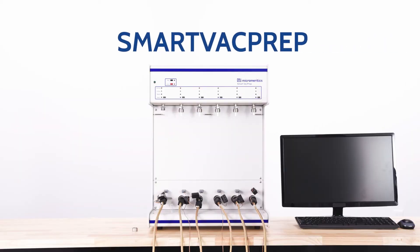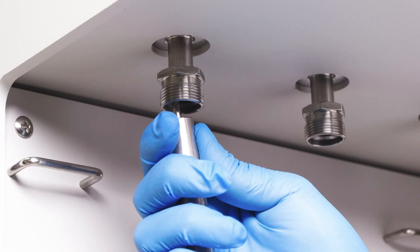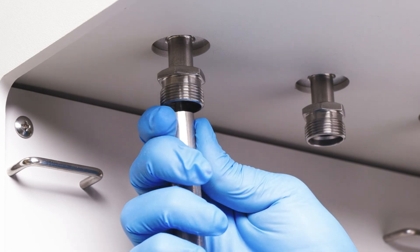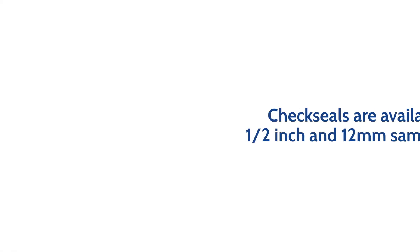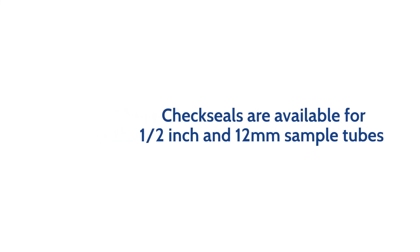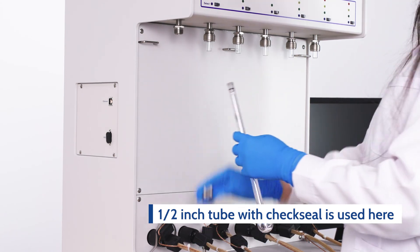A SmartVacPrep automates a majority of the degas process, saving you valuable time. Pins should be removed from the sample port if check seals are not used. Check seals are available for half-inch and 12 mm sample tubes. A half-inch tube with check seal is used in this demonstration.